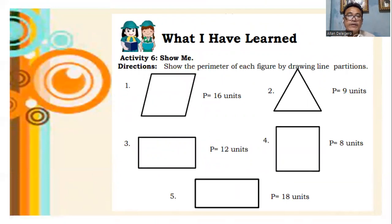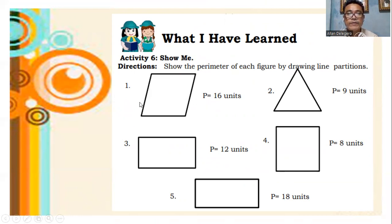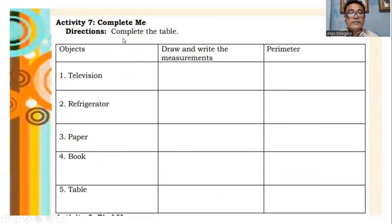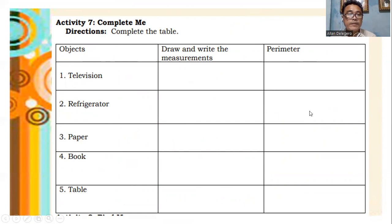Activity 6: show the perimeter of each figure by drawing the line partitions — draw lines for numbers 1 through 5. Activity 7: complete the table. Column A lists the objects, column B asks you to draw and write the measurements and the perimeter, and column C asks you to find the perimeter.